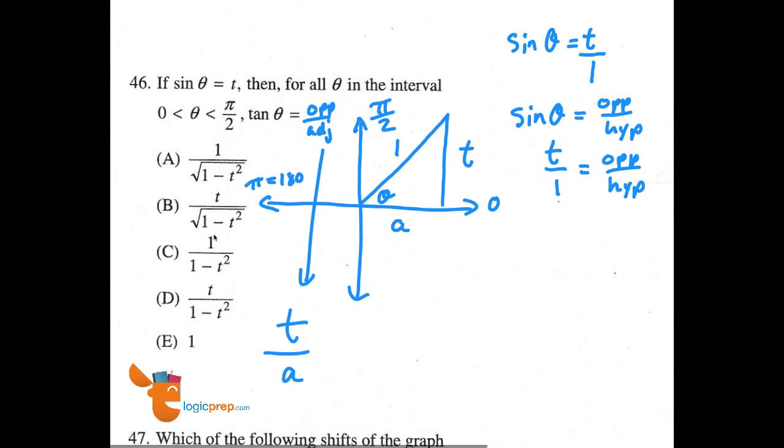However, all the answer choices are in terms of t. We need to solve for A by using Pythagorean Theorem. So we know that A squared plus B squared equals C squared. That means that A squared plus t squared equals 1 squared. And we know 1 squared is 1, so I'll remove this square. Now we're going to solve for A. So we're going to subtract t squared from both sides. And we have A squared set equal to 1 minus t squared.